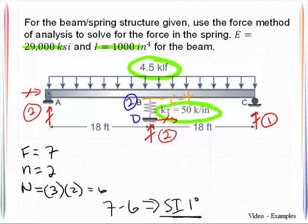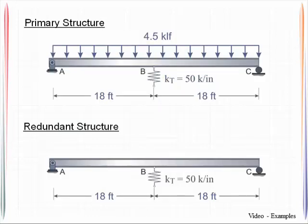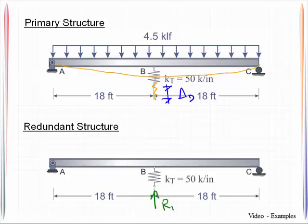There are any number of choices for selecting a redundant, but I am going to use RDY — the vertical force at the bottom of the spring. When I remove that redundant, something very key and contrary to what many people want to do: I did not remove the spring. The spring is a structural element and remains. I sketch the deflected shape of the entire system, noting it displaces down by delta D.